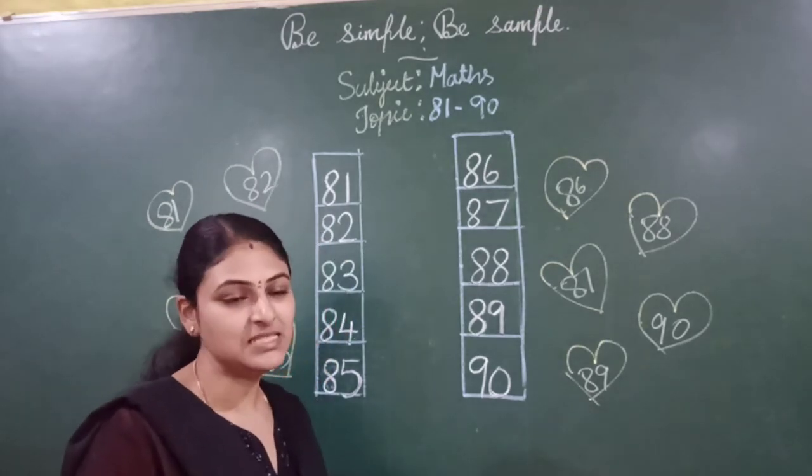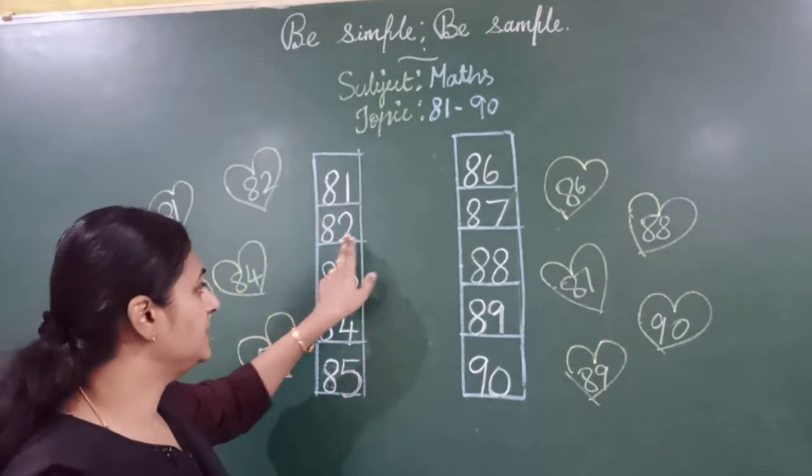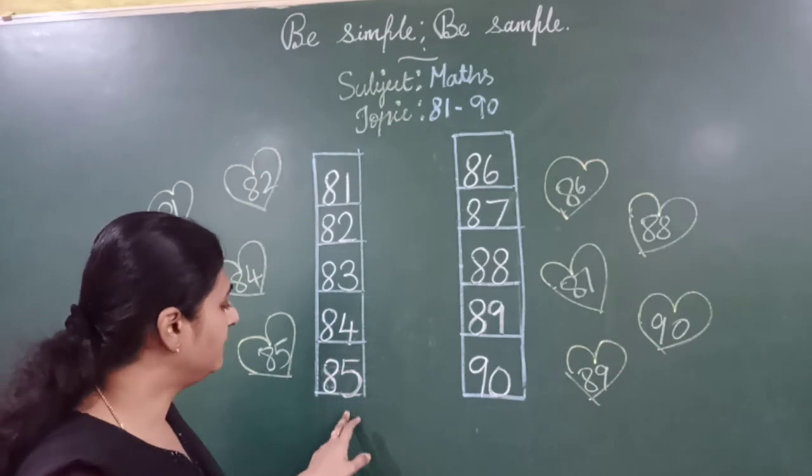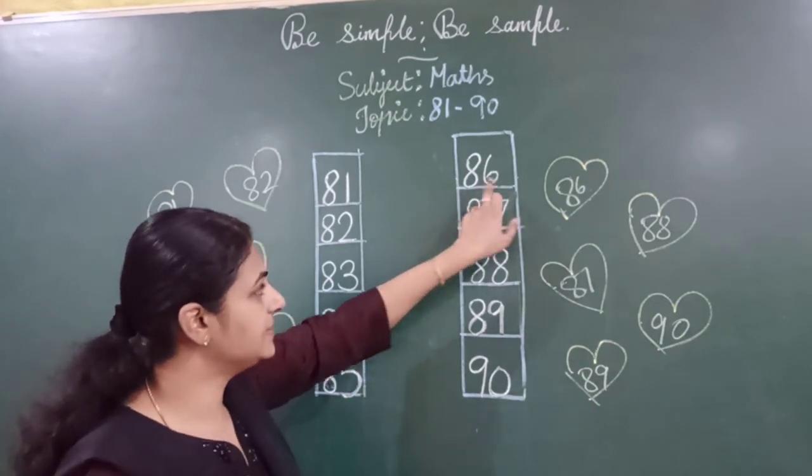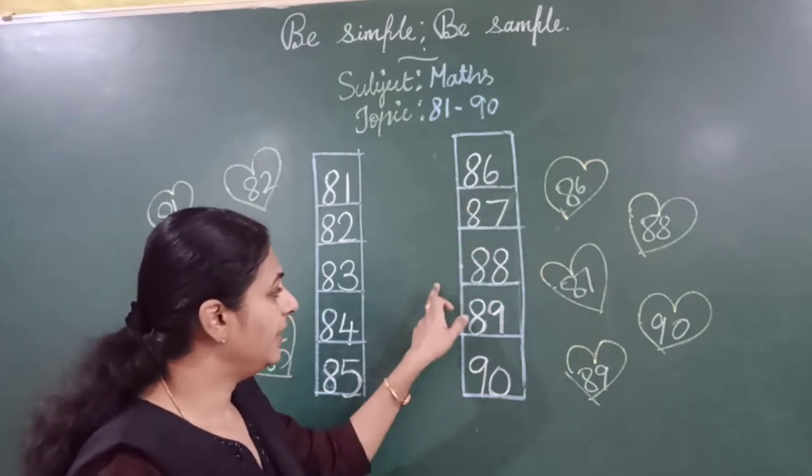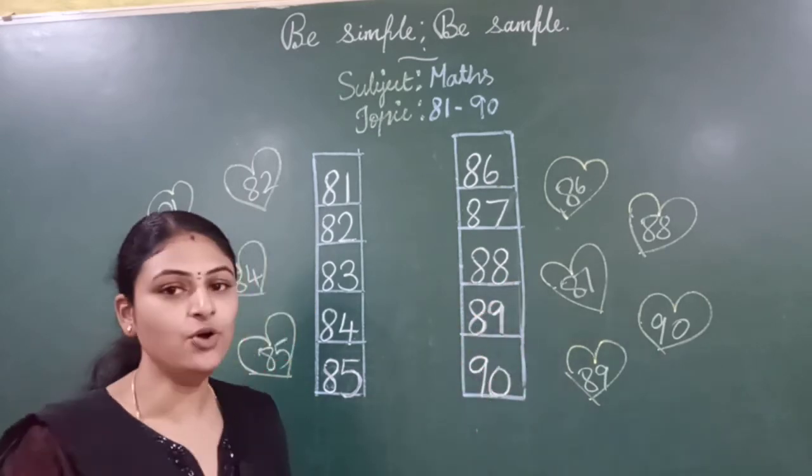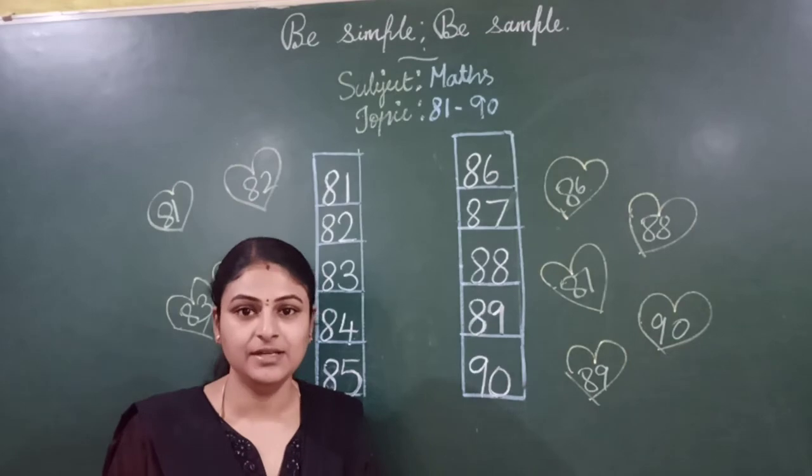Of course, this is very easy. 81, 82, 83, 84, 85. After 5, 6 will come: 86, 87, 88, 89, 90. Okay children?